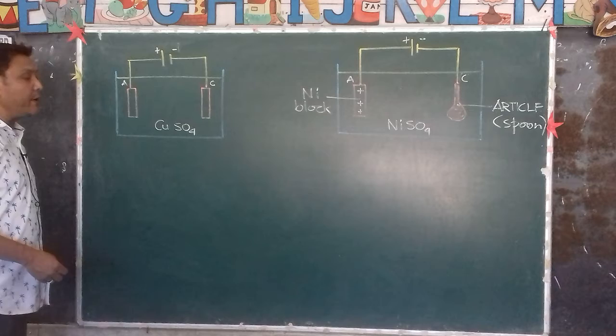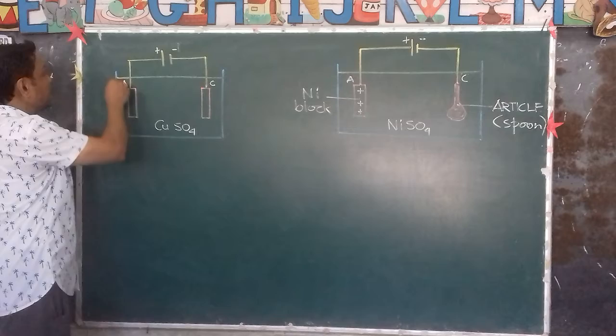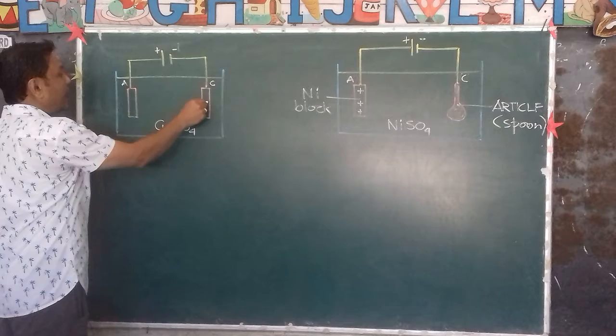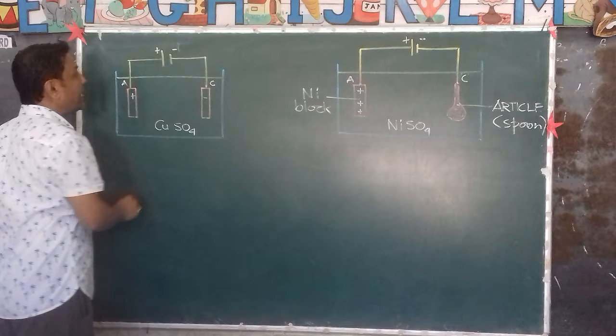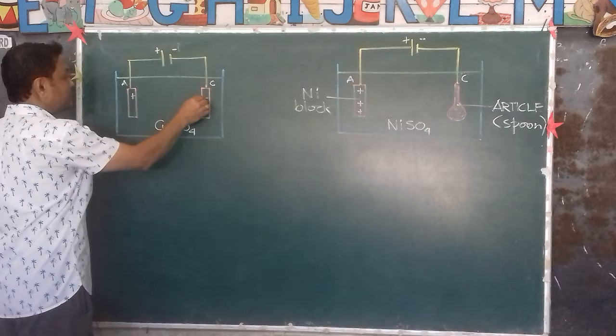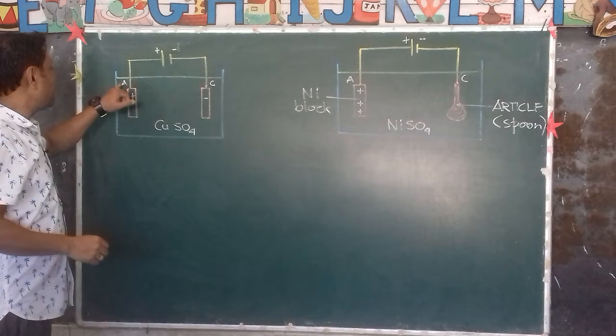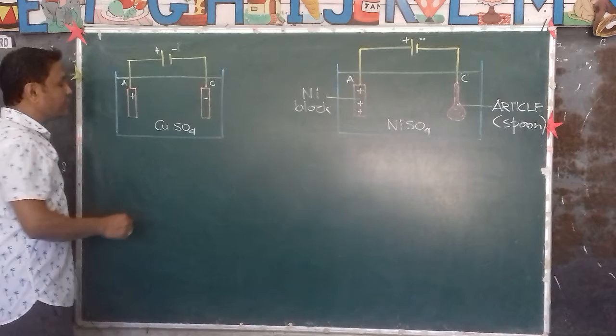As you know, this setup is called the voltmeter or the electrolytic cell. We have the anode and the cathode — the electrodes. The positive electrode is called the anode and the negative is called the cathode. The cathode is connected to the negative terminal of the battery, whereas the anode is connected to the positive terminal.